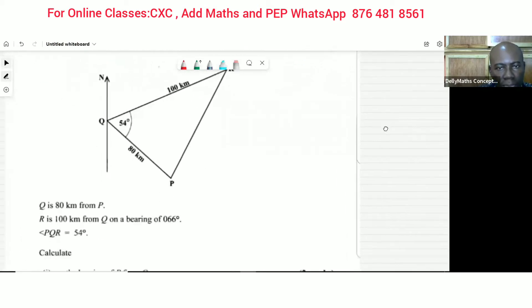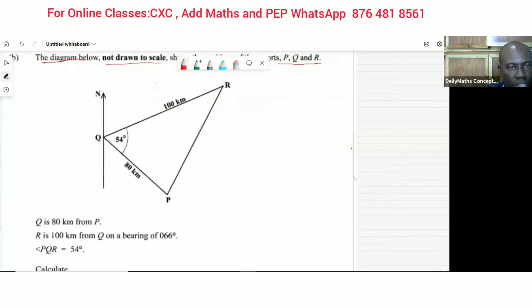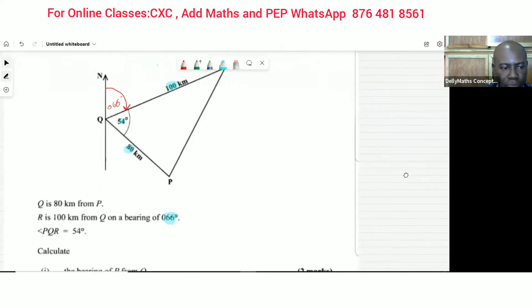They gave us some information. Q is 80 kilometers from P. Also, R is 100 kilometers from Q on a bearing of 066 degrees. This was not written so I'm just going to put it on. Remember all bearings are from the north, so from Q there was a 66 degree movement. And then 54 degrees was given to us right here already.